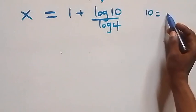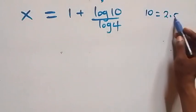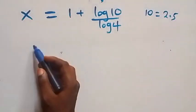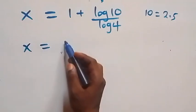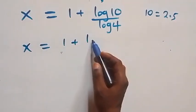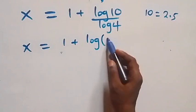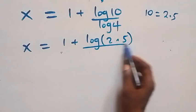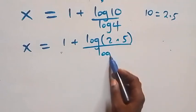We can also write 10 as 2 times 5, so x equals 1 plus log(2 times 5) over log 4.